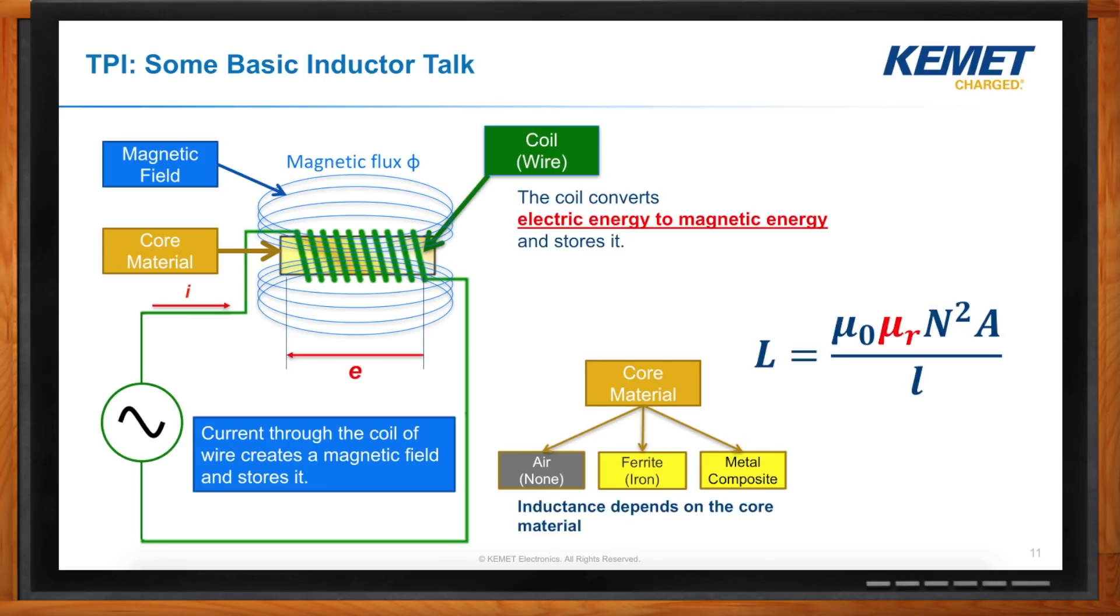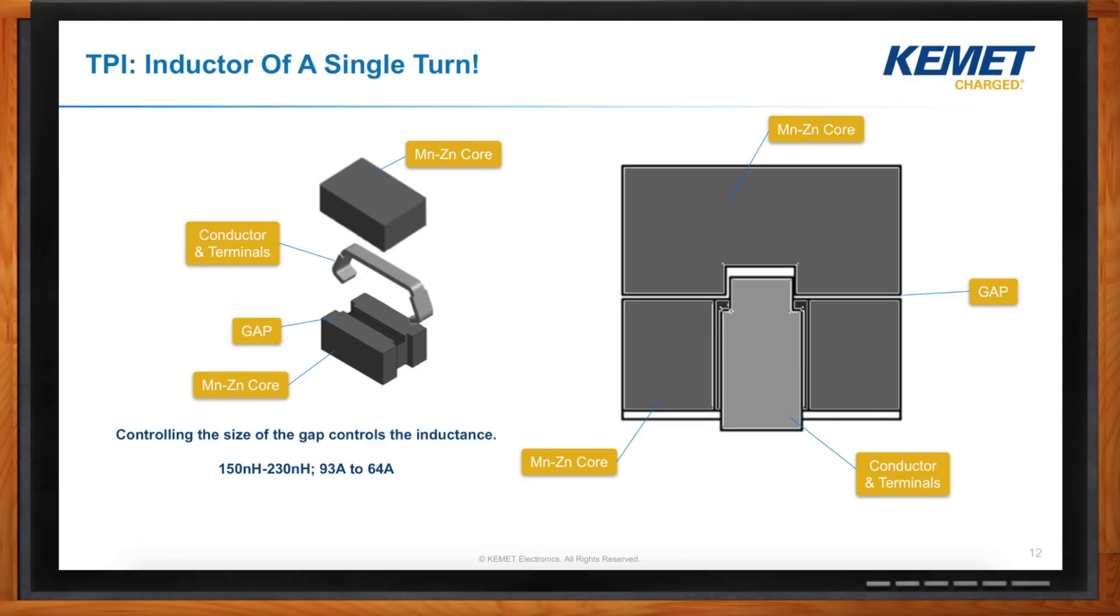But we have an inductor with a single turn. And the reason we're able to get away with that is that we have core material that is a very high permeability. So, we can use only a single turn of wire and still get back a lot of that would be lost inductance because of the high permeability of our core material. So, to put it into perspective, a one centimeter long, one millimeter diameter wire has inductance of about six nanohenries.